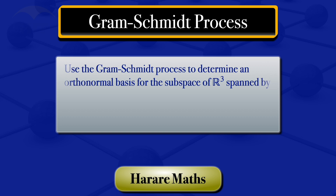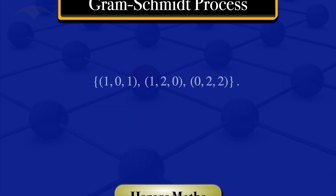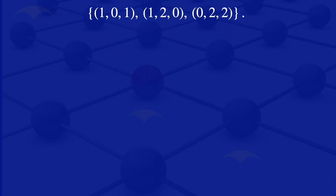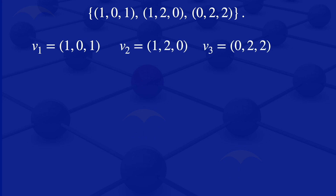In this tutorial, I am going to use the Gram-Schmidt process to determine an orthonormal basis for the subspace of R3 spanned by the set of vectors 1, 0, 1 and 1, 2, 0 and 0, 2, 2. Given those three vectors, I will start by naming them. The first one I will call V1, the second one V2, and the third one V3.